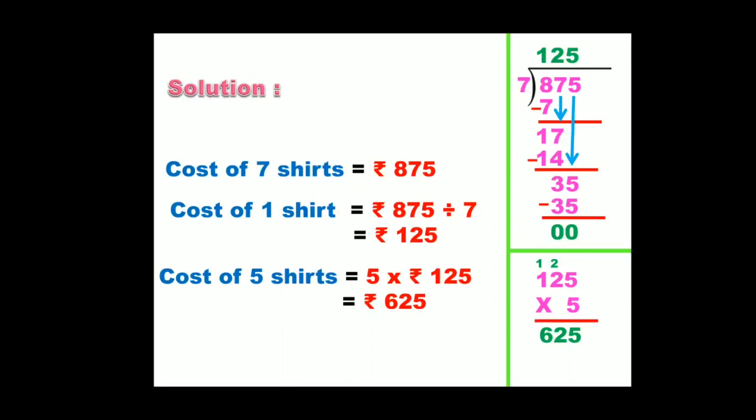That is cost of 7 shirts is equal to ₹875. Cost of 1 shirt is equal to ₹875 divided by 7. Here when we are finding the cost of 1 we divide. Now divide the numbers and you will find the answer as ₹125.